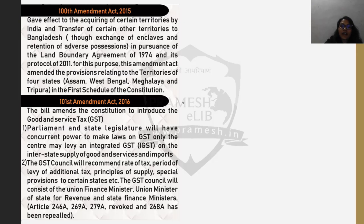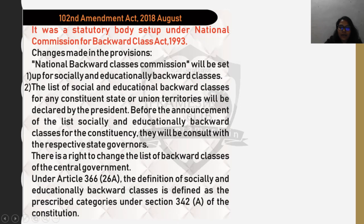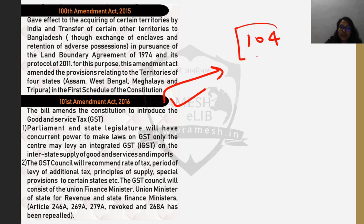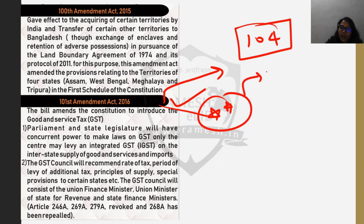We will be studying about the 101st Amendment Act. This is a very recent amendment; the total number of amendments till February 2020 were around 104, so we are almost at the verge of completion. The 101st Amendment Act is a very important amendment, and so many questions have been asked from this topic in both the UPSC Prelims and UPSC Mains examinations.